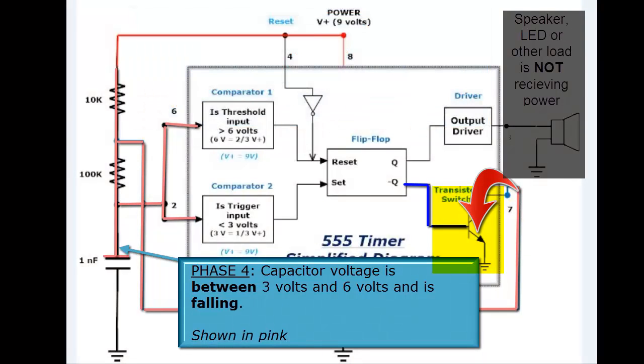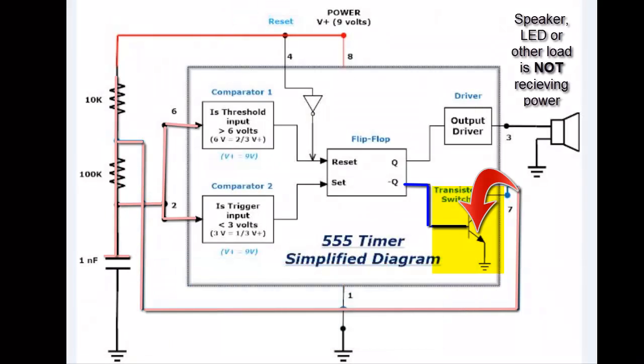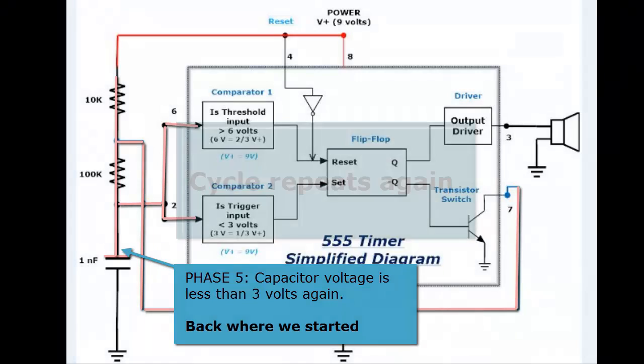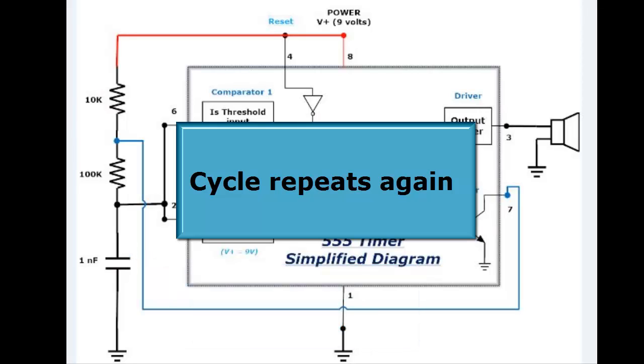And then everything enters phase 4 where the capacitor voltage is decreasing. And once it gets below one third of V plus again then the whole process starts all over again.